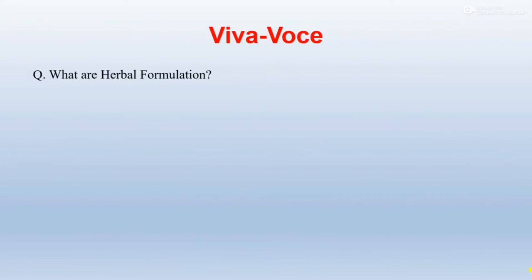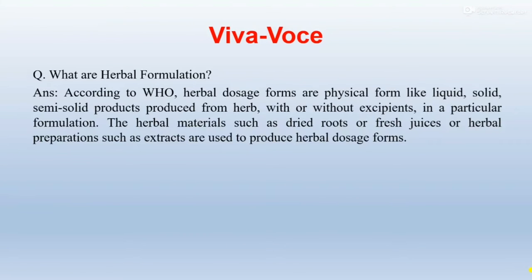Here are some questions to be asked in Viva. What are herbal formulations? According to WHO, herbal dosage forms are physical forms of liquid, solid, or semi-solid products produced from herbs with or without excipients in a particular formulation. Herbal materials such as dried roots or fresh juices, or herbal preparations such as extracts, are used to produce herbal dosage forms.